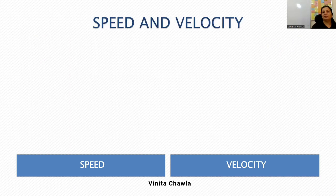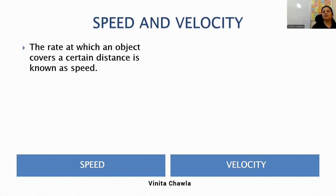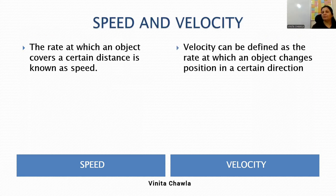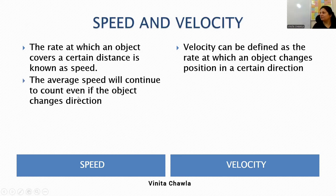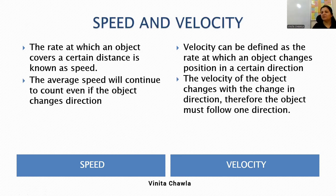Let's differentiate velocity and speed. Speed is the rate at which an object covers a certain distance — distance upon time. Velocity is the rate at which an object changes its position in a certain direction. Average speed will continue to count even if the object changes direction, whereas velocity changes with a change in direction — therefore the object must follow one direction.